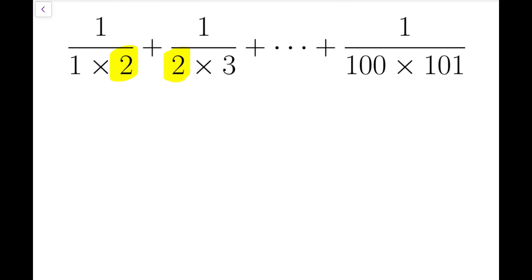So some of you may have already known this trick, which is that for each fraction 1 over the product of 2 consecutive numbers, we can split it into the difference of 2 fractions, taking actually the same numbers, which is 1 over 1 minus 1 over 2.